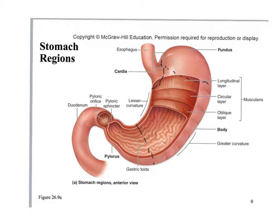The stomach mixes food with gastric juice, which is a collection of all the gastric secretions produced by the stomach cells. On the inside of the stomach there are folds in the mucosa that are continuous throughout the small and large intestine. These folds help increase surface area — they're the gastric folds, also known as rugae.